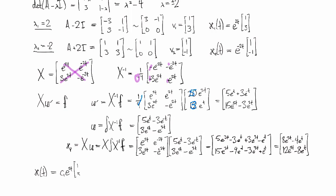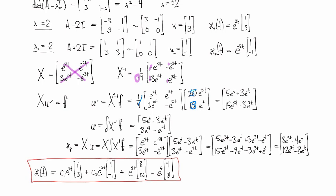The general solution looks like c1 e to the 2t times 1, 3, plus c2 e to the minus 2t times 1, minus 1, plus e to the 3t times 8, 12, and e to the t times negative 4, negative 8. That is our general solution for this non-homogeneous system.